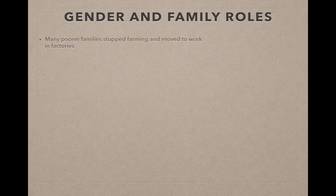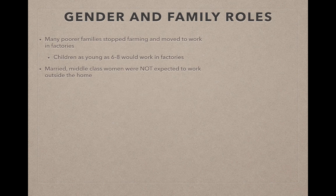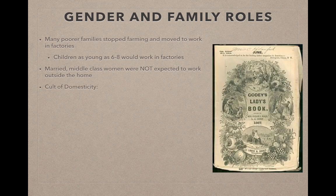Let's talk about gender and family roles. Many poor families stopped farming and moved to cities to work in factories. Children as young as six to eight worked in factories alongside their parents. If they were too poor to afford a farm, they would pack up the whole family and move to work in a factory. Married middle-class women were not expected to work outside the home — the expectation was to stay in the home and raise their family. That is an example of the cult of domesticity.